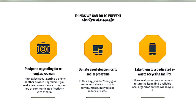These toxic chemicals can transmit into groundwater, causing harm to both land and sea species, and may also contribute to air pollution. Here are tips to prevent electronic waste: the first is to postpone upgrading for as long as you can — think twice about getting a phone or other device upgraded. The second is to donate used electronics to social programs, reducing electronic waste while giving someone a device to use. And lastly, take them to a dedicated electronic waste recycling facility; if there is no way to reuse or return the item, find a reliable local organization who will recycle.